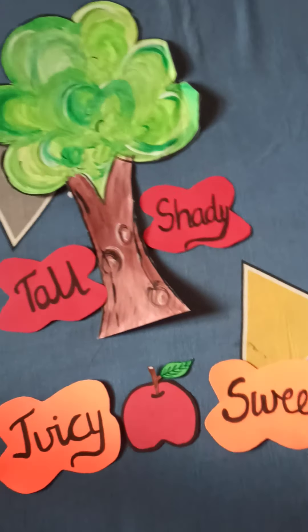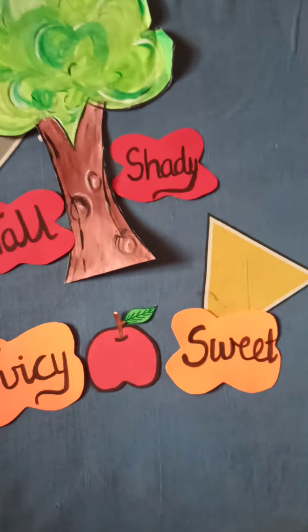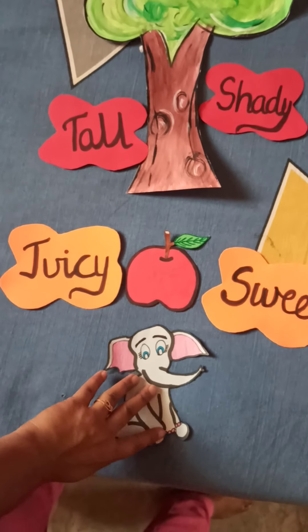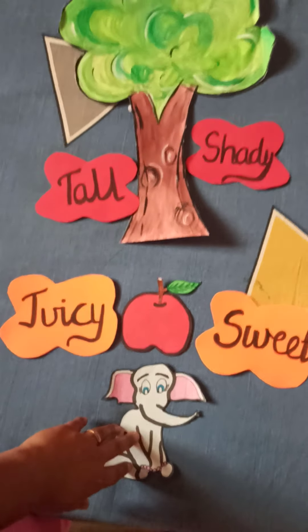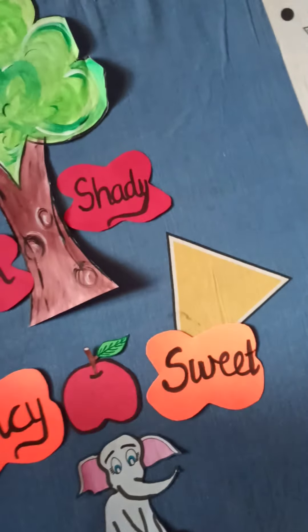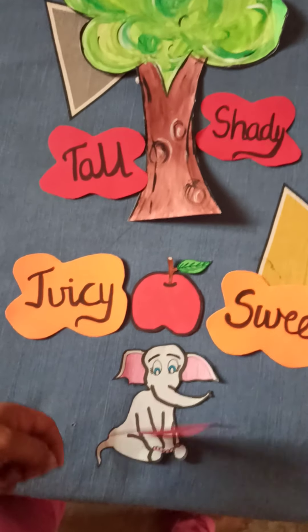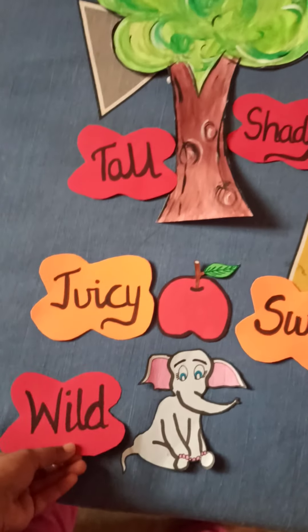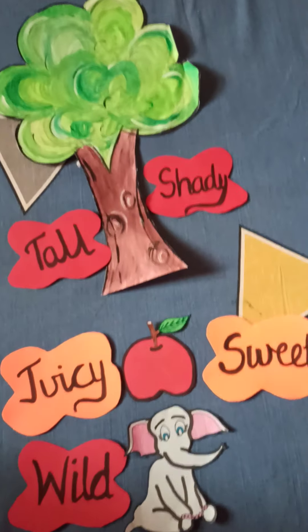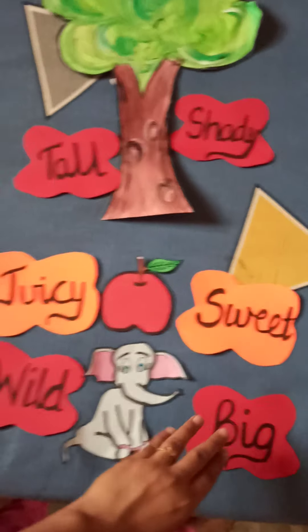Now comes to another noun. Just look at these nouns very carefully. Now this is an elephant. Can you tell me something about this elephant? This elephant is wild and big.